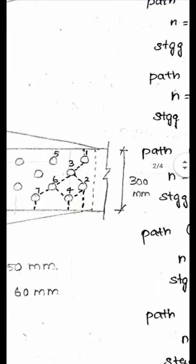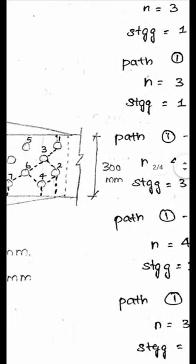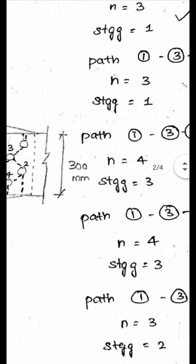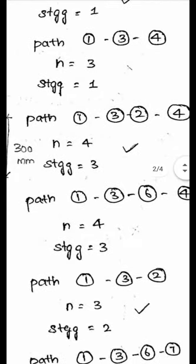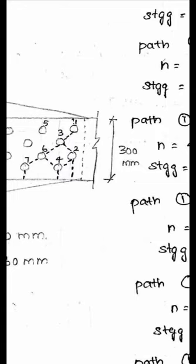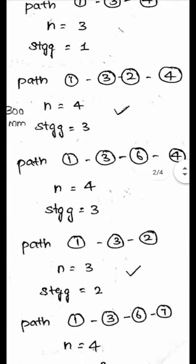For path 1-3-6-4: holes are 1, 2, 3, 4 so n = 4. Inclined lines between 1-3, 3-6, and 6-4 give staggered = 3. Both paths 1-3-2-4 and 1-3-6-4 have the same n = 4 and staggered = 3, so they will give the same results. Similarly, path 1-3-6-7 also has n = 4 and staggered = 3. For path 1-3-2: n = 3, staggered = 2.